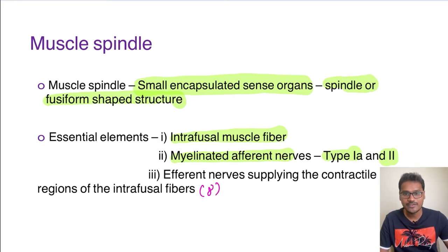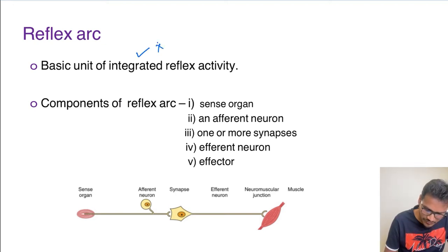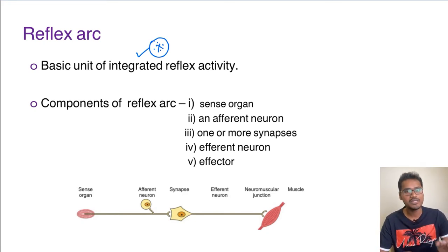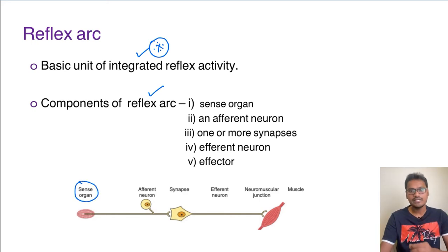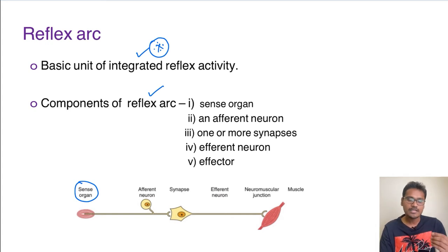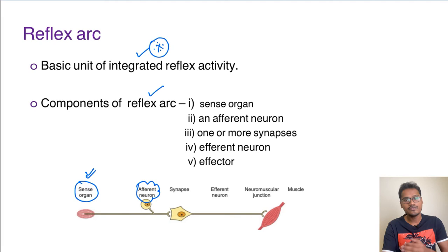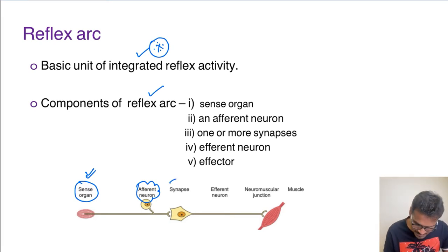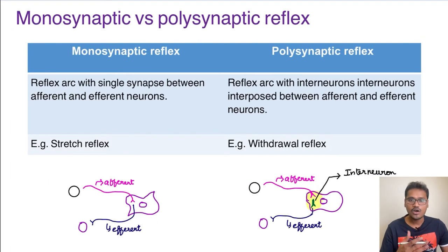Before going into the discussion of reflexes, we need to understand the concept of the reflex arc — the basic unit of integrated reflex activity. The components include a sense organ, an afferent neuron carrying sensation to the spinal cord, a synapse, an efferent neuron, and finally the neuromuscular junction innervating the muscle (effector). Depending on the number of synapses, reflexes are called monosynaptic or polysynaptic.